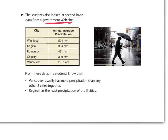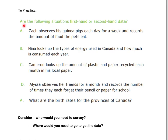To practice, with your group members you are discussing whether or not the following situations are first-hand or second-hand data. I'll read each one and you can press pause and discuss. A: Zach observes his guinea pigs each day for a week and records the amount of food the pets eat — is this first-hand or second-hand data? B: Nina looks up the types of energy used in Canada and how much is consumed each year. C: Cameron looks up the amount of plastic and paper recycled each month at his local paper.